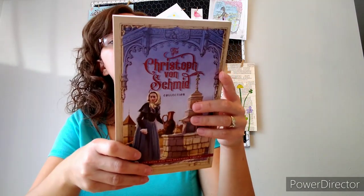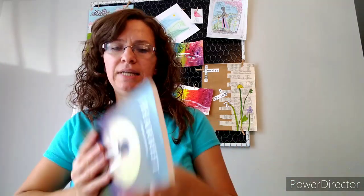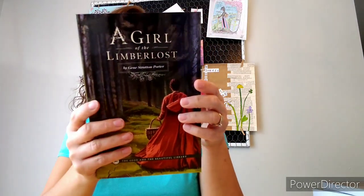To go with high school two, she also has some books to read. This one is The Christoph Von Schmid Collection, and she has Harriet the Moses of Her People, Men of Iron, Sagebrush Surgeon, and The Girl of the Limberlost. That is what she'll have for language, so math, language, science, and history.